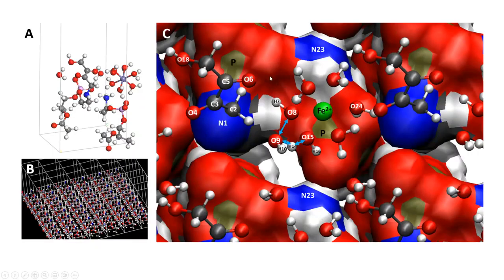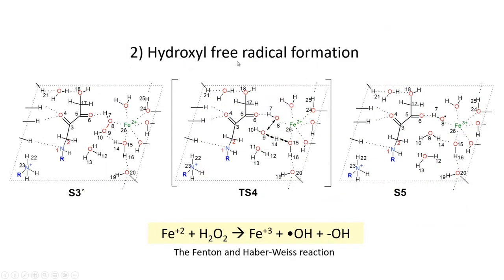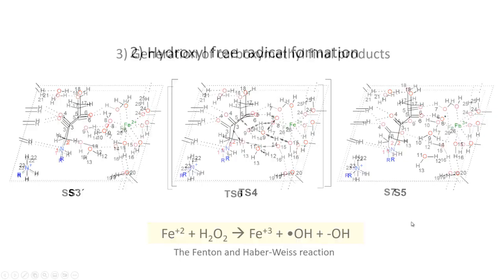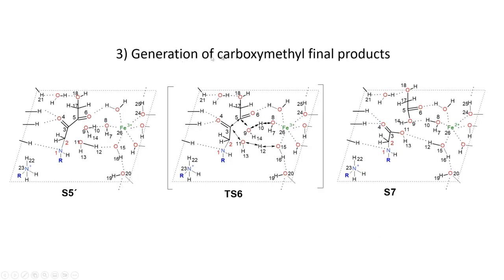This slide shows the second step of the reaction, with the generation of a hydroxyl radical and hydroxide ion and the oxidation of the iron ion. The next step involves the generation of carboxymethyl final products, concerted with the reduction of the iron ion from the ferric form to the ferrous form.